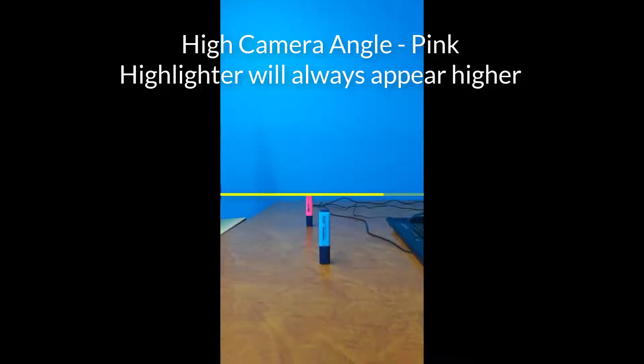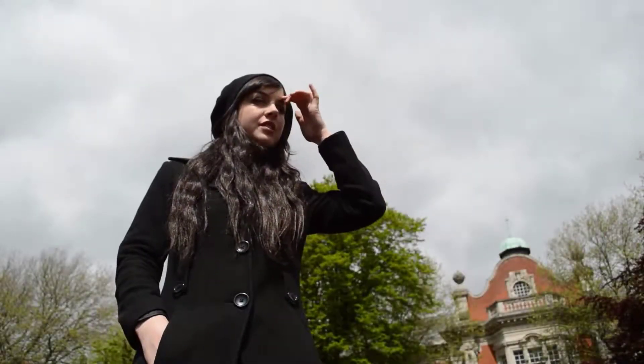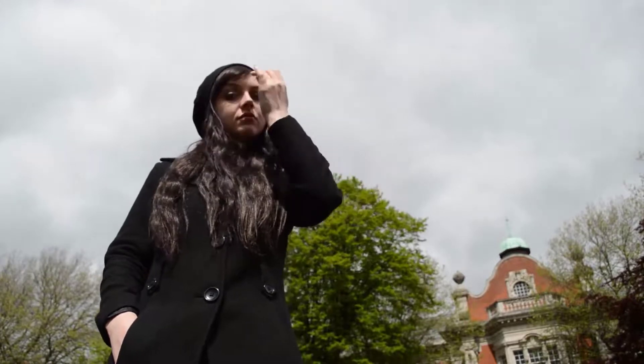This is called low camera angle and has been used by photographers and filmmakers for decades to create a different mood in the scene. A low camera angle makes the subject look bigger and anything in the background look smaller.